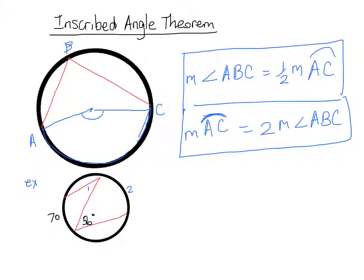Let's look at an example. Here's an example at the bottom right of the page. In this example, I've given you the measure of the intercepted arc, and we know that the inscribed angle has to be half that. So we know automatically that this is going to be half of 70, so angle 1 is equal to 35 degrees.